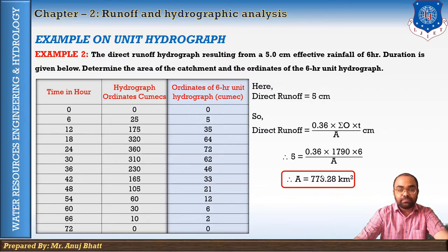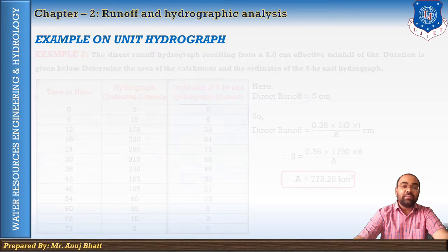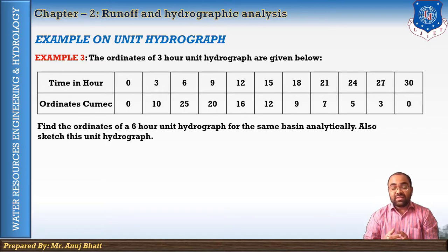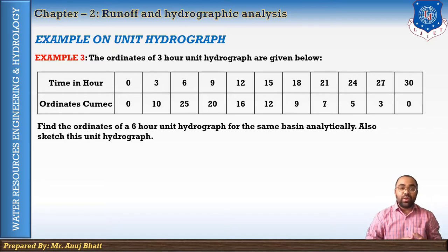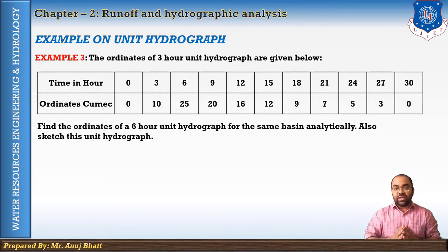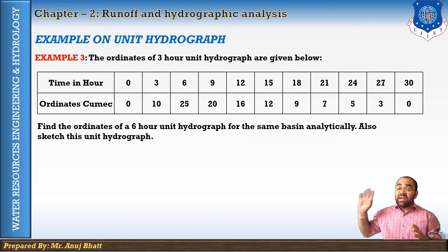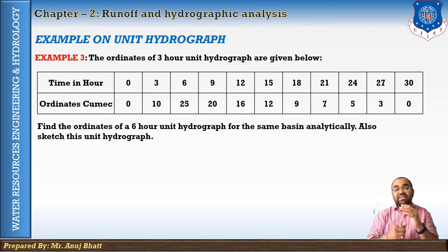The third example: the ordinates of a three-hour unit hydrograph are given. Here we have the three-hour unit hydrograph values — ranging from zero to thirty — and we need to find the ordinates of the six-hour unit hydrograph for the same basin. All assumptions from unit hydrograph theory apply. The sketch of the six-hour unit hydrograph is also required.